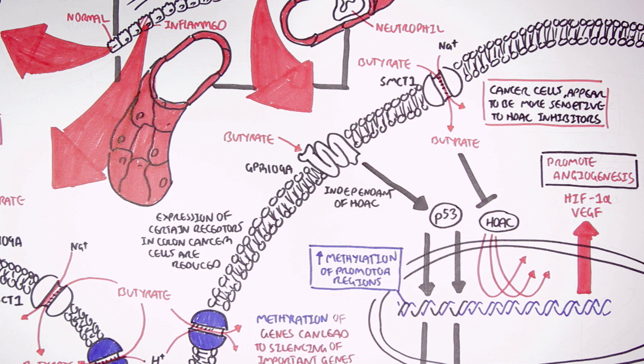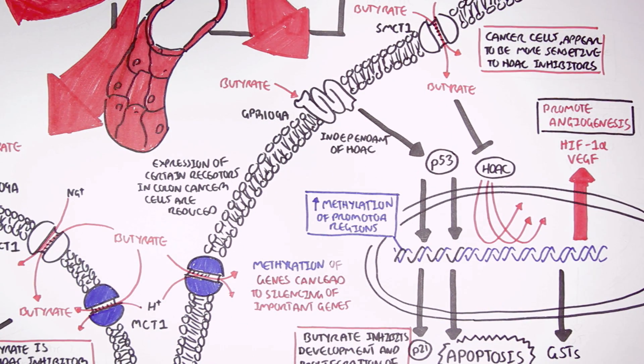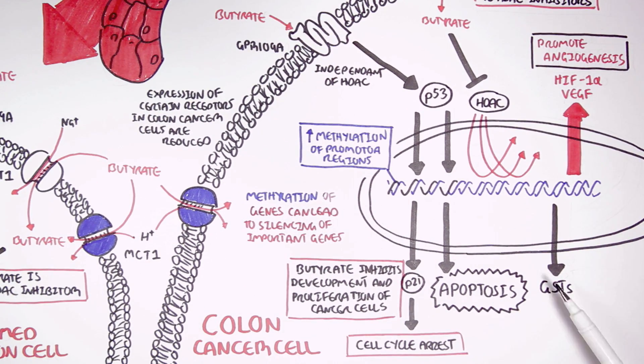Inhibition of histone deacetylase, HDAC, can allow expression of genes that code for glutathione S-transferases, for example, which will reduce oxidative damage.